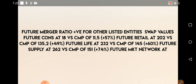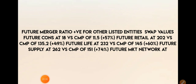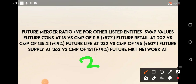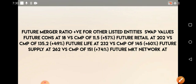Future Lifestyle also has a fair price of 232 rupees, and you can see a 60 percent premium is being given. For Future Supply Chain, a 74 percent premium is being given, with a current market price of 151 rupees. Future Market Network also gives a good amount of premium — around 37 percent. So you can see that almost in Future Supply Chain you are getting almost 74 percent premium.